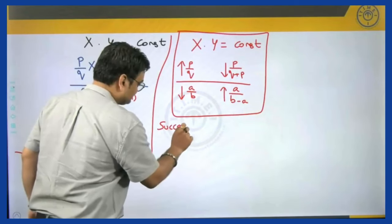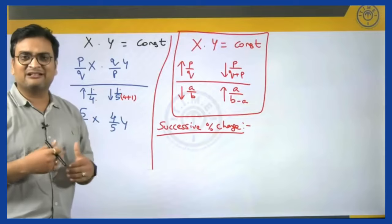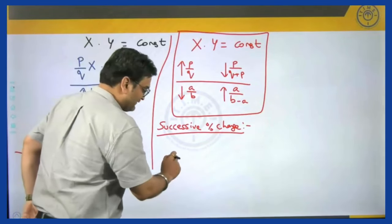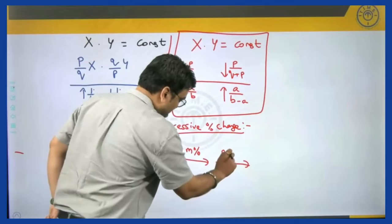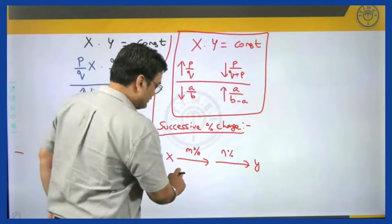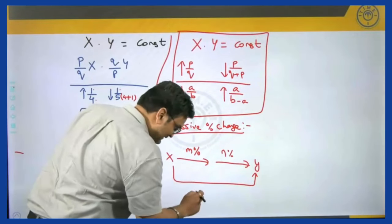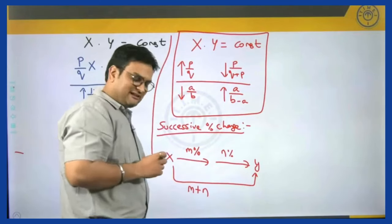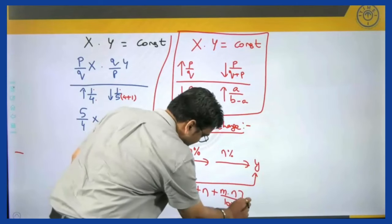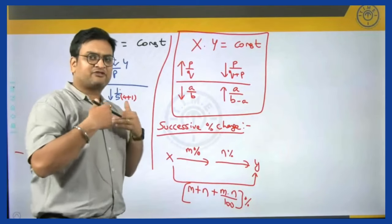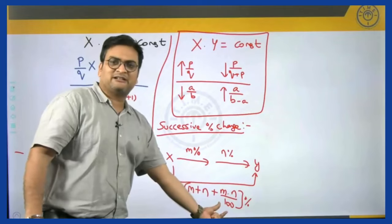Besides this, there is something called successive percentage change. What do we mean by successive percentage changes? Successive means one after the other. For example, if a variable x first increases by m percent and then increases by n percent and finally becomes y, the overall percentage change from x to y is given directly by the formula: m + n + (m × n)/100 percent — that is, sum plus product divided by 100.